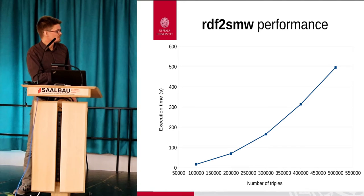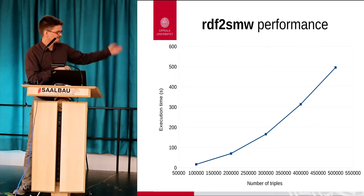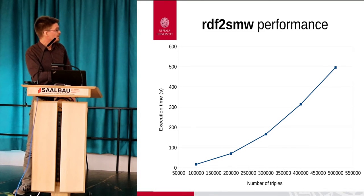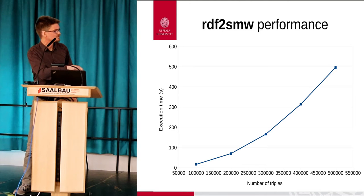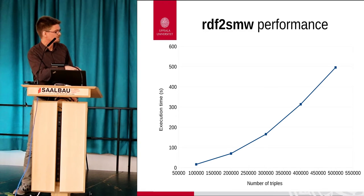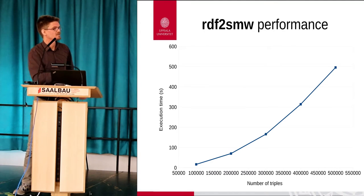To give you some performance numbers: unfortunately I don't have exact numbers for the MediaWiki import because that takes a long time, so I couldn't rerun it. But this conversion tool, rdf2smw, I can at least show how it behaves with the number of triples. We go from 50,000 triples up to half a million triples. The y-axis is seconds - up to about 500 seconds, which is around 8 minutes at the top. For 100,000 triples it's like 15 seconds, and for half a million triples it takes around 8 minutes. But it's not overnight - it's much faster.